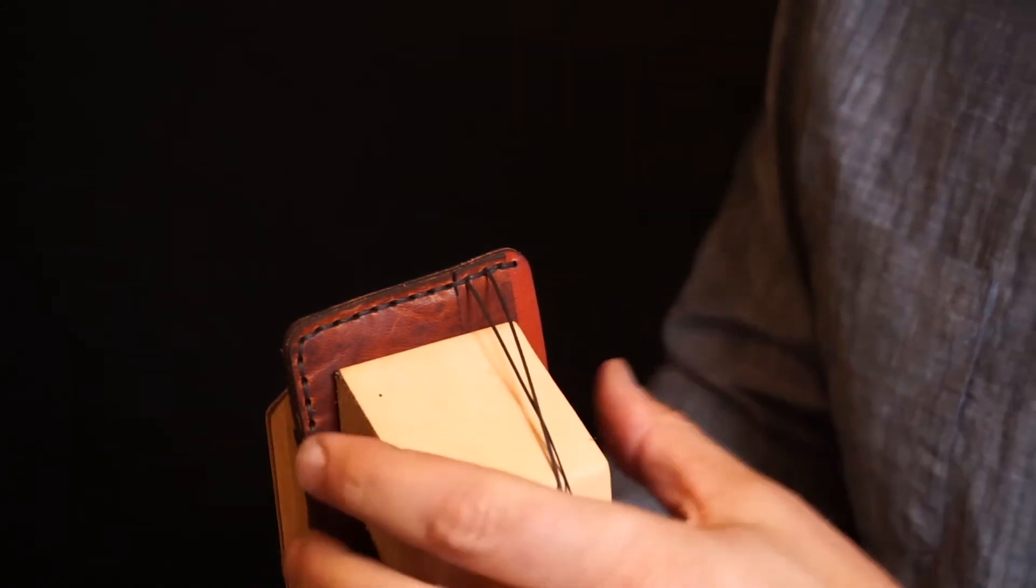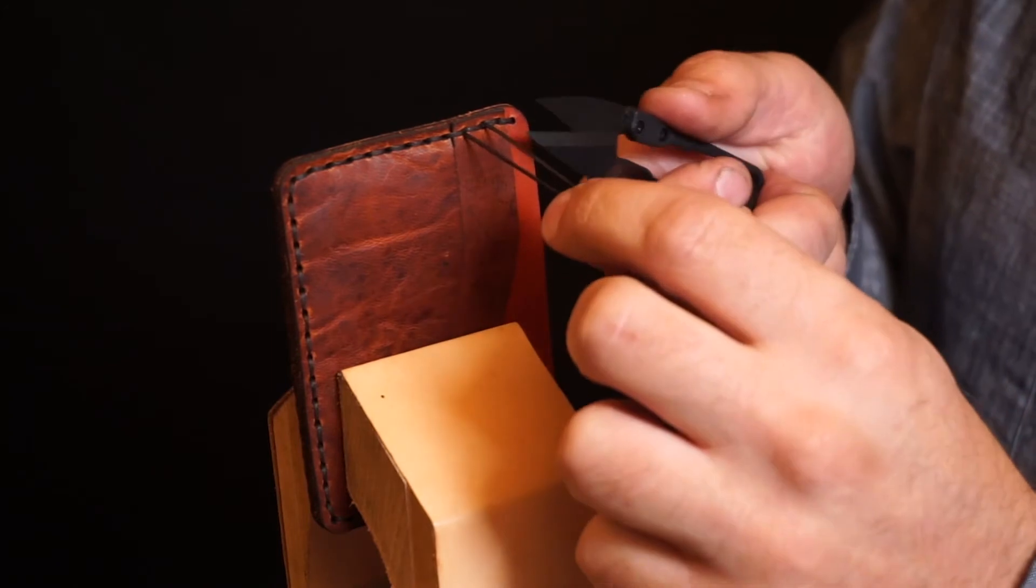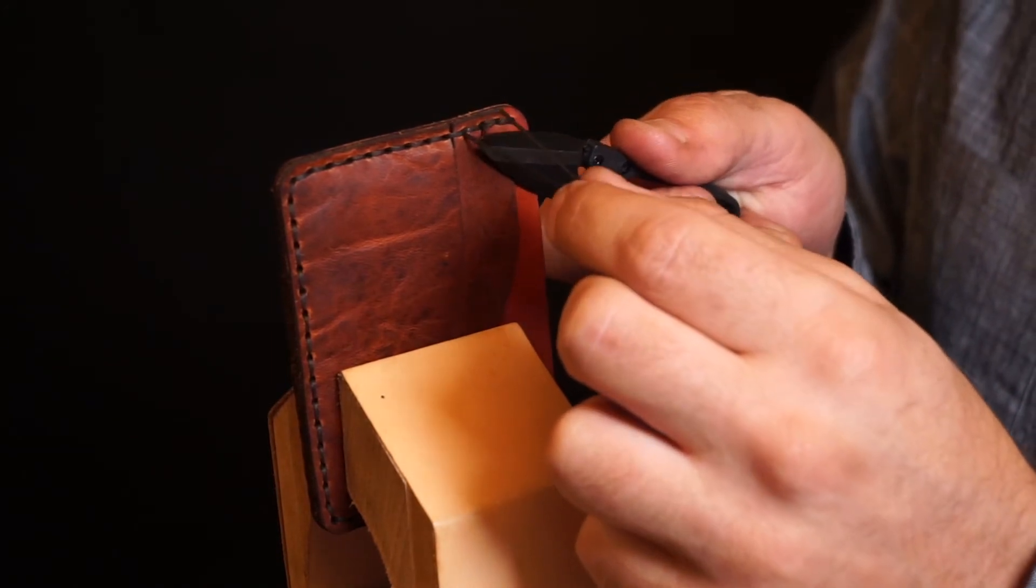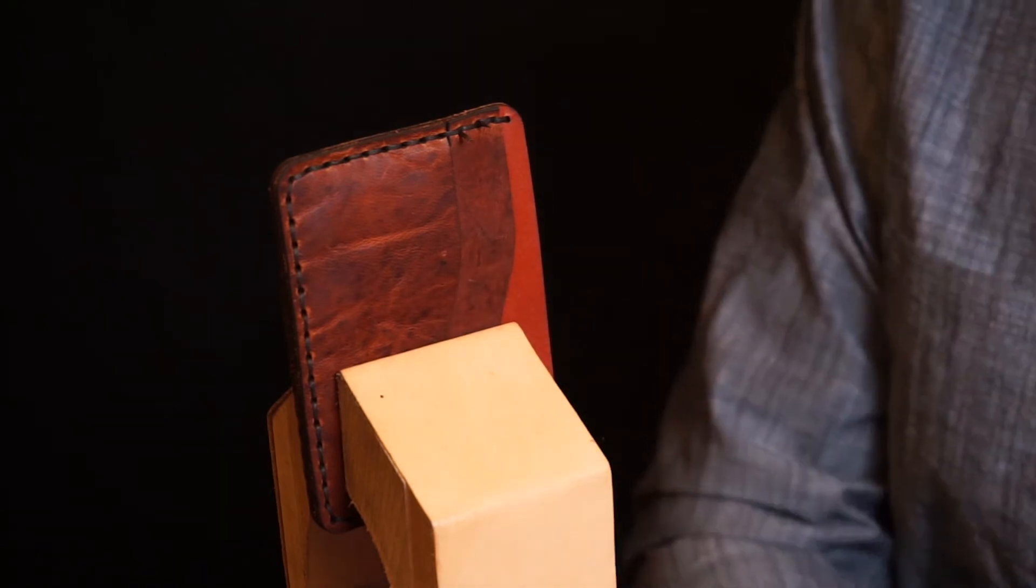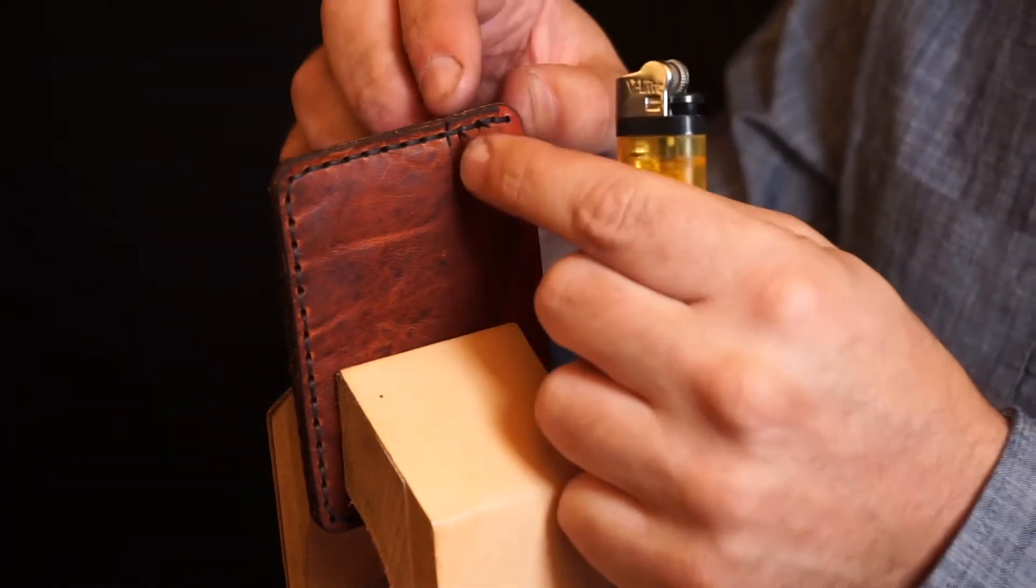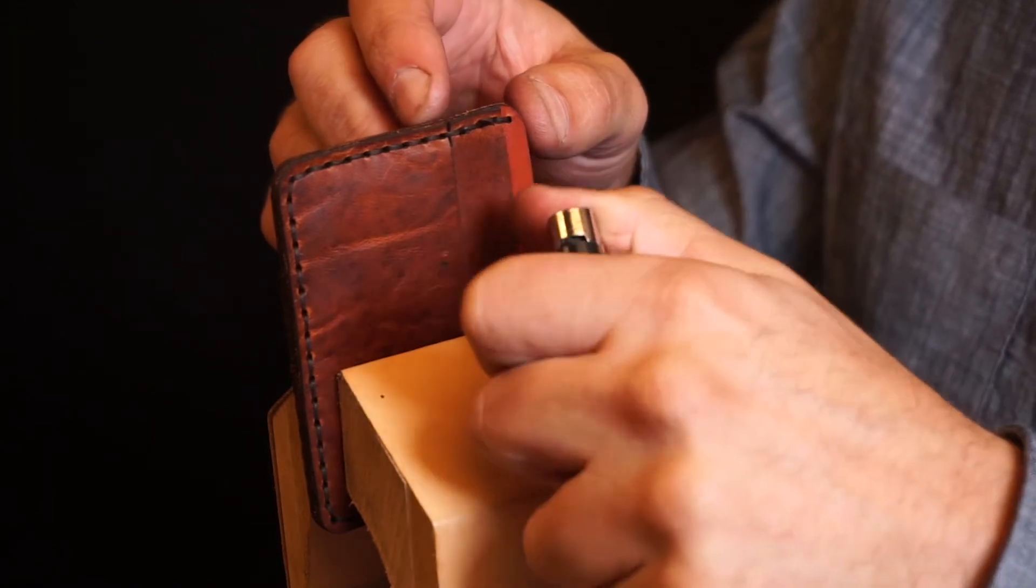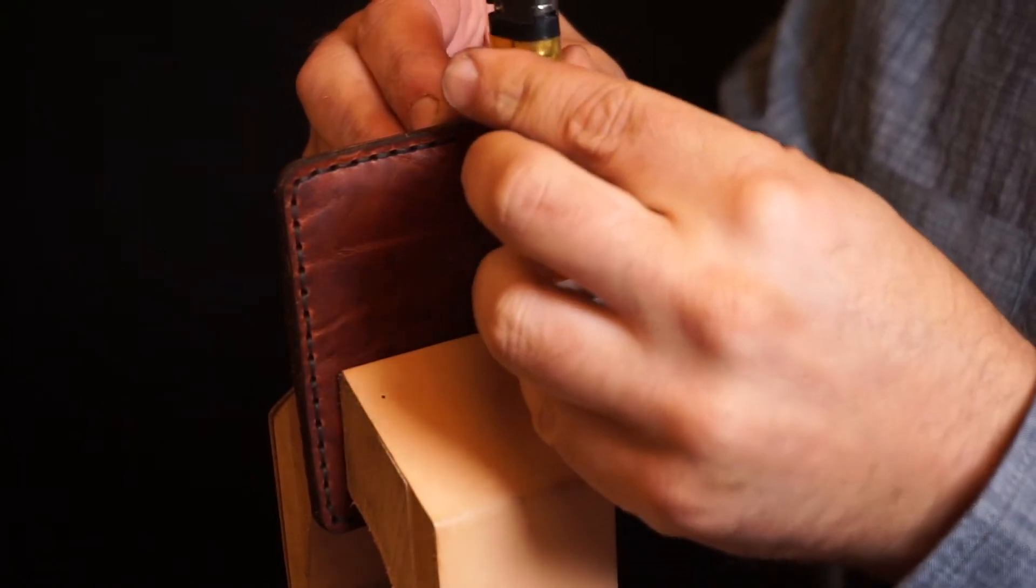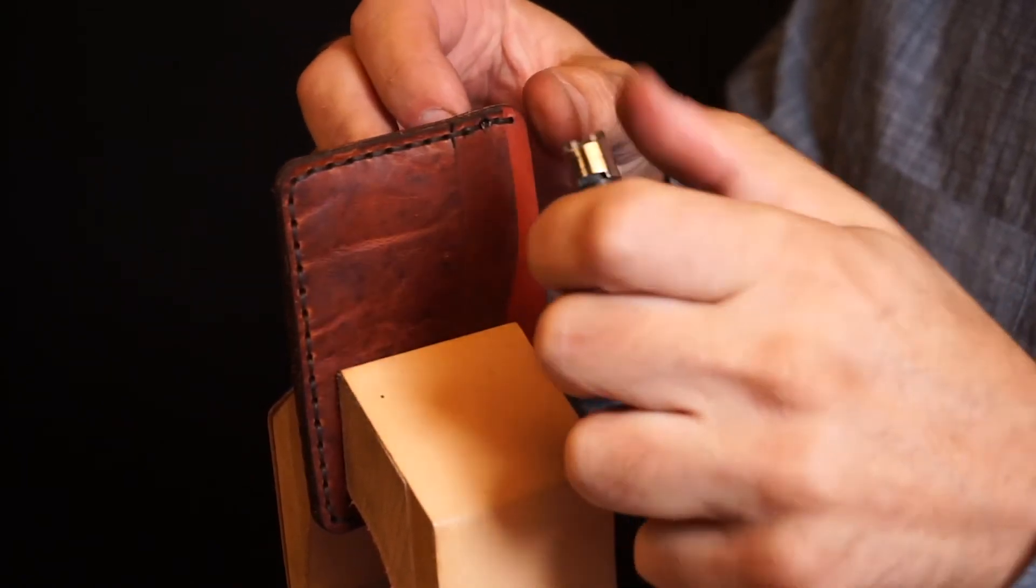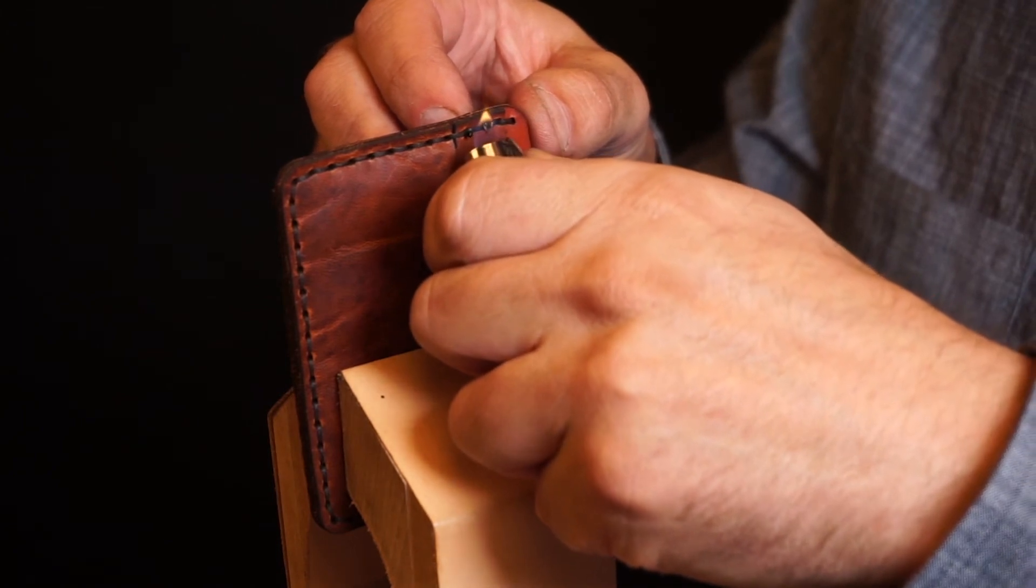Clip the threads to about an eighth of an inch long. And then we're going to melt the ends. Here I'm just using a pair of sewing scissors. So we have two little tails that we're just going to melt using a lighter. And we want to make sure we don't burn the thread or the leather. Just want enough heat to melt that and melt that wax into the stitch line to lock those in place.